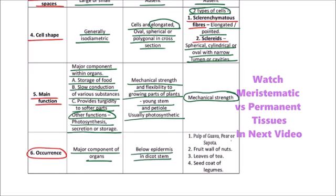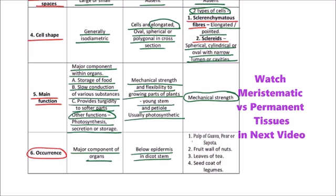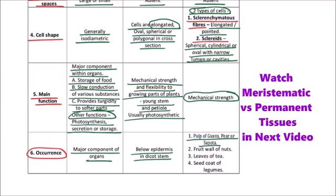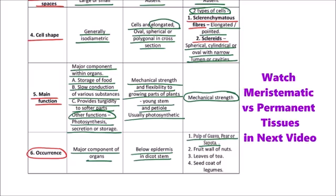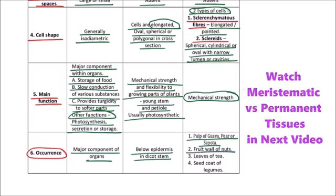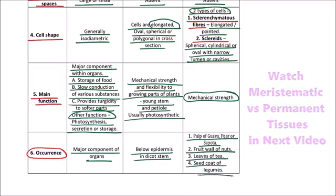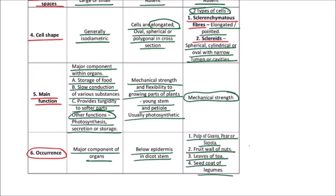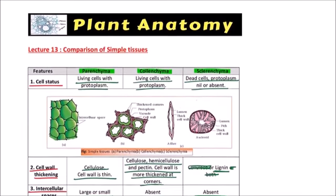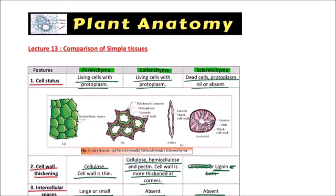Sclerenchyma is found in the pulp of guava, pears, or sapota. The grittiness of pulp in guava or pears is because of sclereids or stone cells. Fruit wall of nuts, leaves of tea, and seed coat of legumes also possess sclerenchyma. So this is all about the comparison between the simple tissues in plants. Thanks for watching this video.